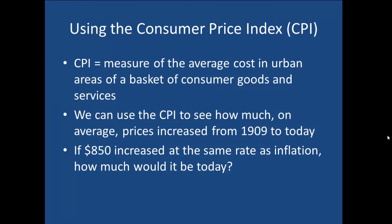Commonly, people use the Consumer Price Index, or CPI, to do this conversion. The CPI is a measure of the average cost in urban areas for a basket of consumer goods and services. We can use the CPI to see how much, on average, consumer prices rose from 1909 to today, and then apply that increase — or inflate the $850 — into what it would be in today's prices.